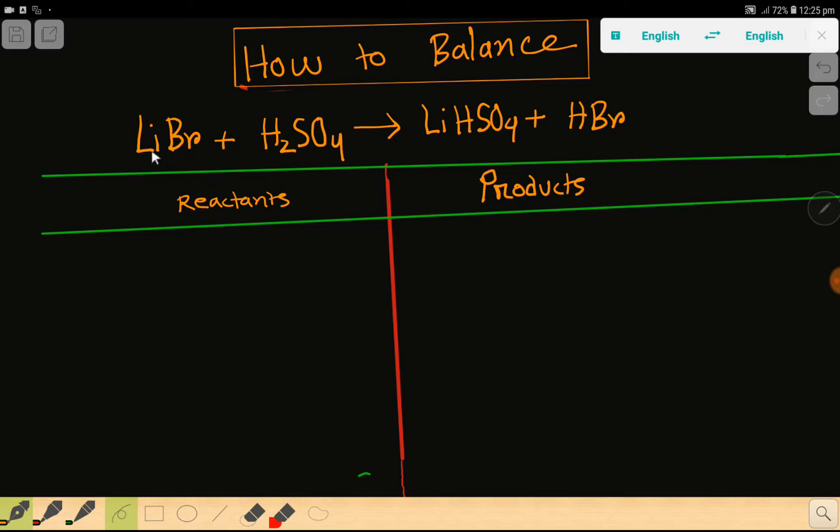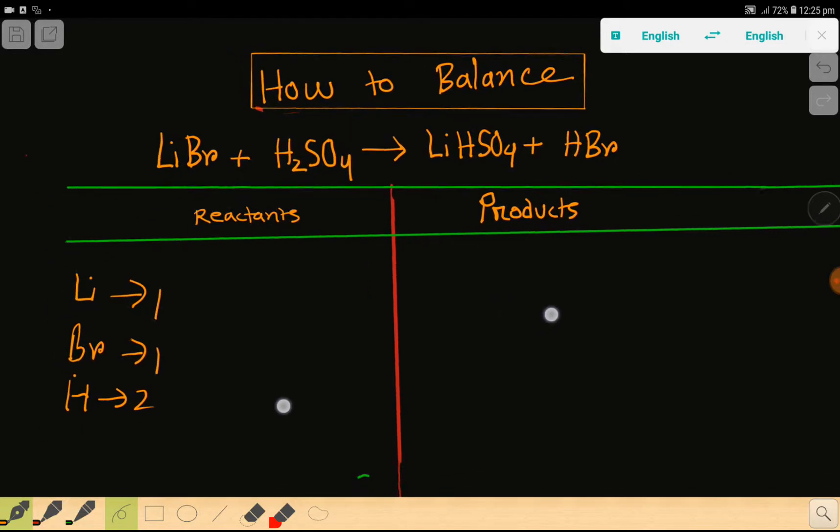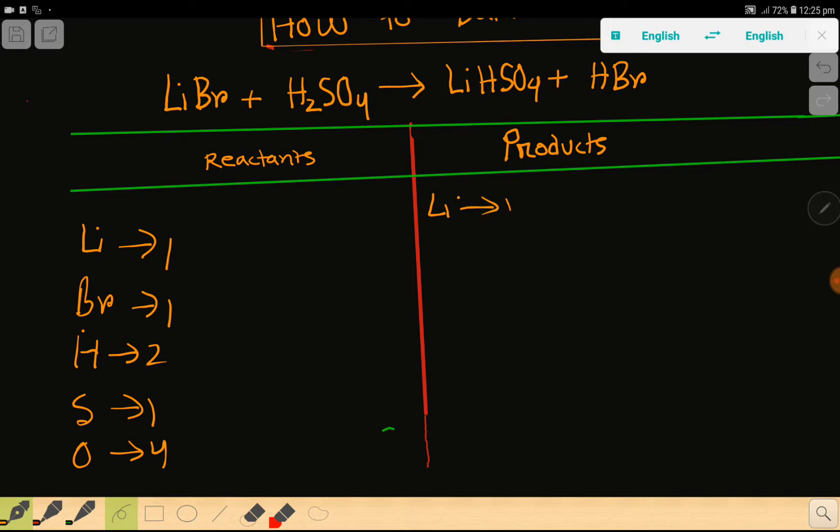In the left hand side we have here lithium which is one. Then we have bromine which is one. Then we have hydrogen here which is two. Then we have here sulfur which is one. Then we have here oxygen which is four. In the right hand side we have lithium which is one.